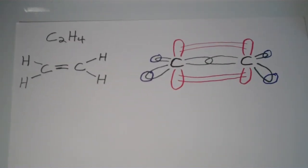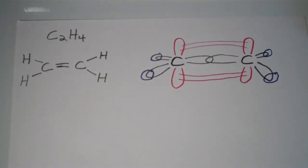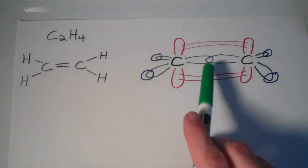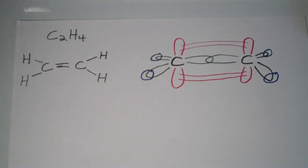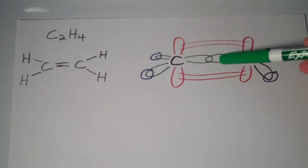So this bond in the middle here between the two carbons, this central bond is one of the bonds. So it's a double bond, so we have two bonds. This is one of the bonds, this direct overlap of the hybrid orbitals, of the sp² hybrid orbitals.